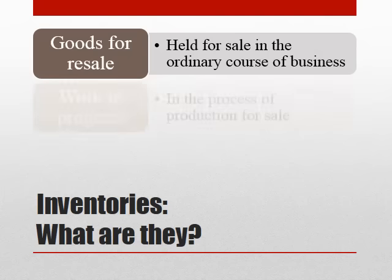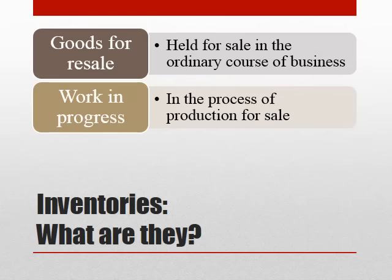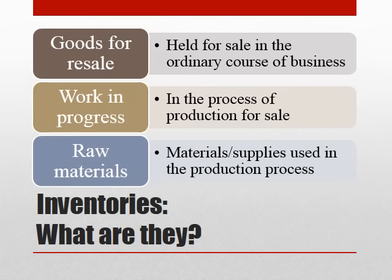We also have work in progress. These are inventories that are part complete. So it may be the case that we're looking at a piece of furniture that has been assembled but has yet to be finished or varnished — it's in the process of production for sale. Once complete, it will then be categorized as goods for resale. The third type of inventory are raw materials, which are the items that a company buys in order to be used in the production process.